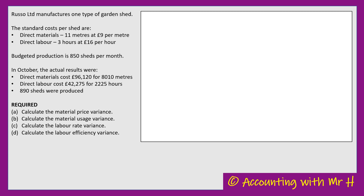Let's get stuck into this question then. RASO Limited manufactures one type of garden shed. The standard costs per shed include direct materials, direct labour, and the budgeted production is 850 sheds per month. All of that information is what we call the standard costing information.